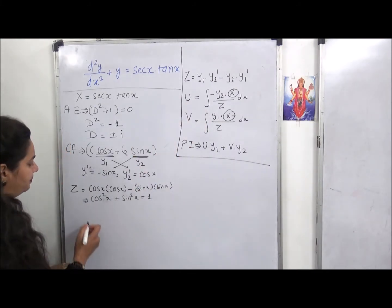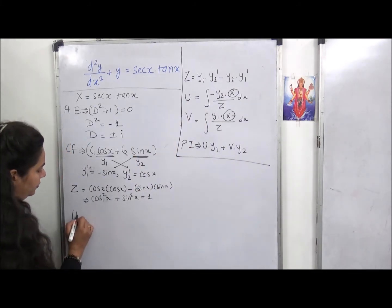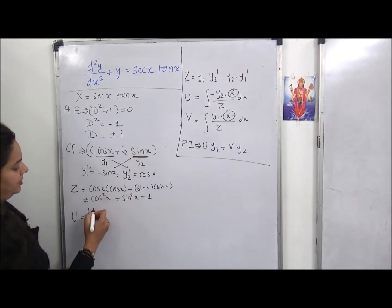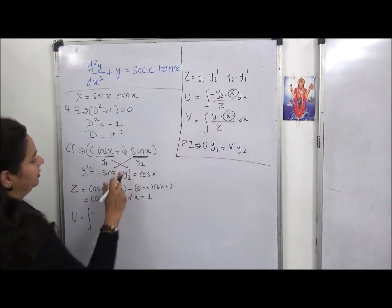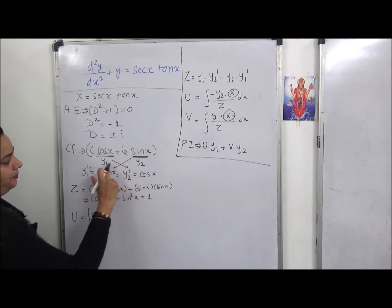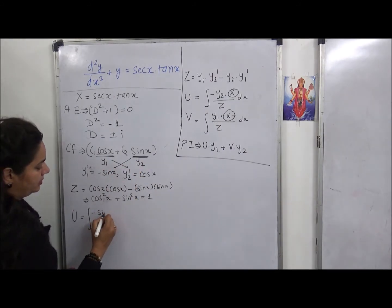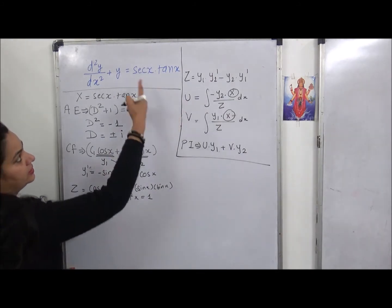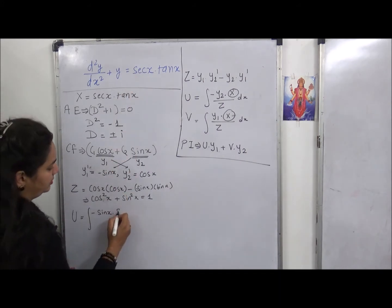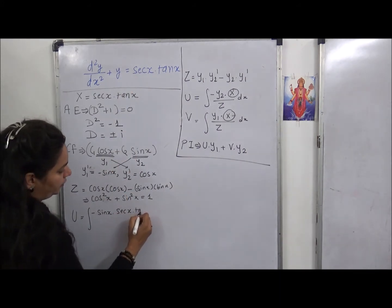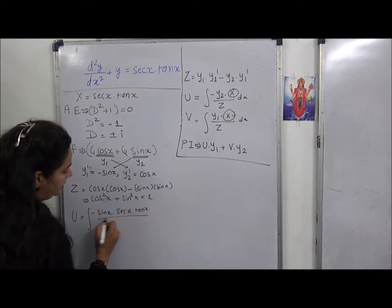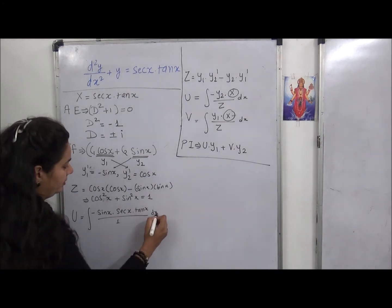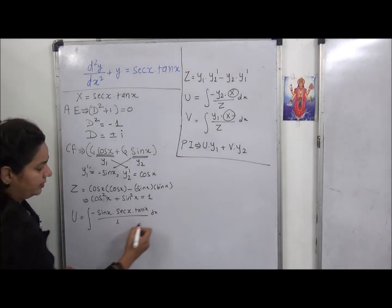Now we put values into u. u = ∫ (−y2 · X) / z dx = ∫ (−sin x · sec x · tan x) / 1 dx. Here sec x = 1/cos x and tan x = sin x / cos x.